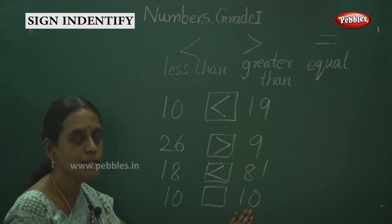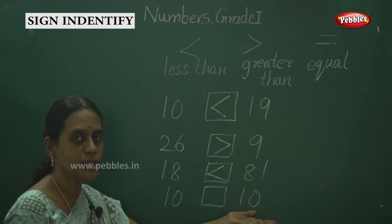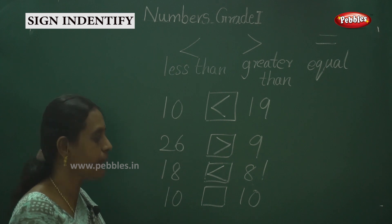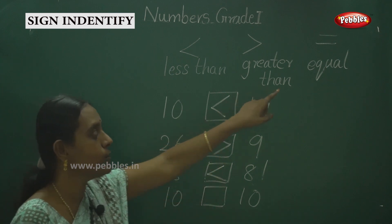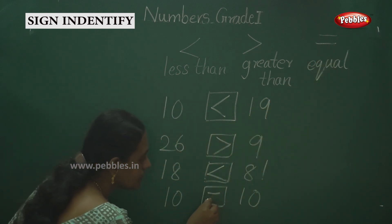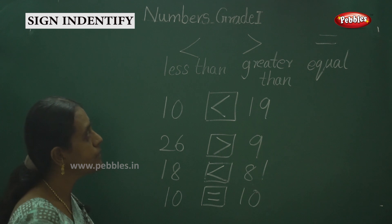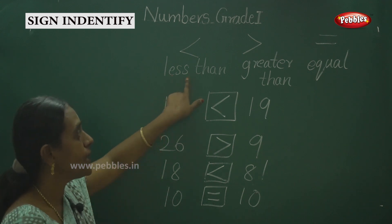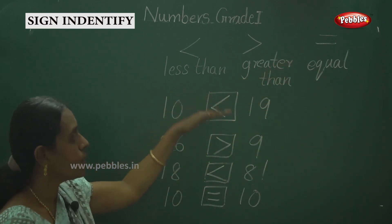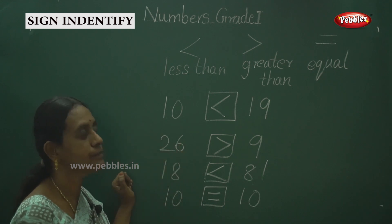Finally, one plate has 10 chapatis and another plate also has 10 chapatis — both are the same. So what is the sign? That is the equal sign. So 10 is equal to 10. Observe these new terms: less than, greater than, and equal, and apply them with your numbers to determine what is greater than, lesser than, and equal.